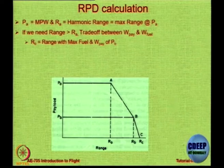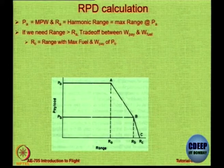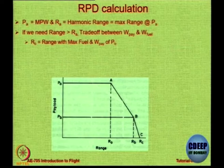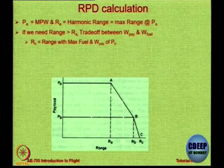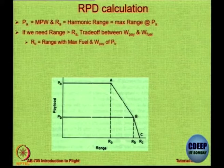Once you hit maximum takeoff weight at point A, you cannot add more fuel because — even though there is space in the fuel tank — you have already hit MTOW. If you want to travel further you must reduce some payload. So you go along line A to B, trading payload for fuel, until at point B the fuel tank is full. At point B the payload bay is not full but the fuel tank is full and you are at maximum takeoff weight, so you cannot add more fuel.